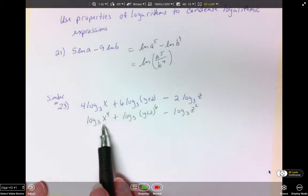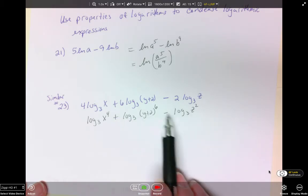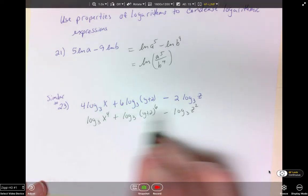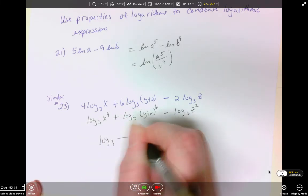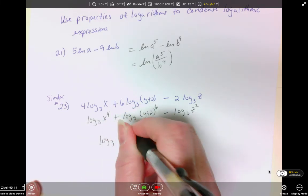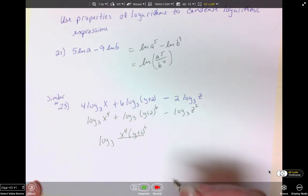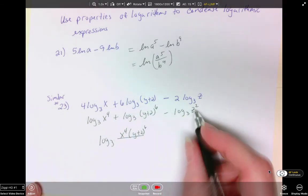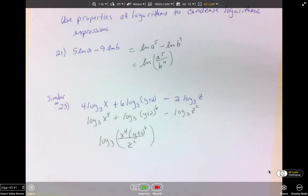So here we have addition which becomes multiplication and we have subtraction which will become division. They all have the same base of log 3. So we're going to have log base 3 of x to the 4th times y plus 2 to the 6th divided by z squared. And then you can put that in parentheses as well.